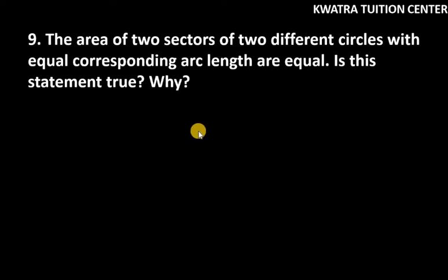Hello everyone, let's start with question number 9. It says, area of two sectors of two different circles with equal corresponding arc length are equal. First of all, the given condition is that we have two circles and the arc length is equal.